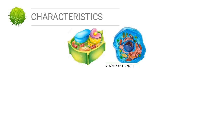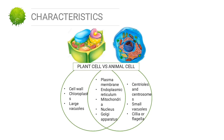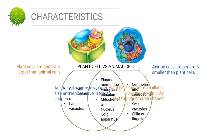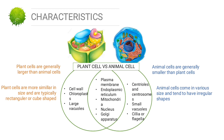Now, plant cell versus animal cell. Between plant cells and animal cells there are some similarities in organelles, including the nucleus, plasma membrane, endoplasmic reticulum, mitochondrion, and Golgi apparatus. The difference is that chloroplasts, cell walls, and large vacuoles are found in plant cells but not in animal cells. In animal cells, there are centrioles, centrosome, small vacuoles, and cilia or flagella, which are not found in plant cells.